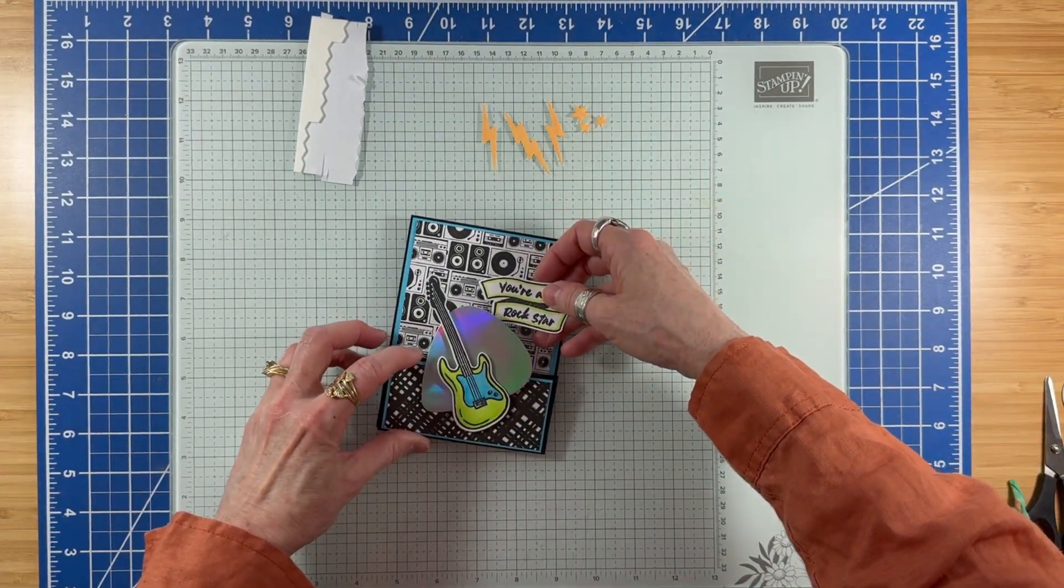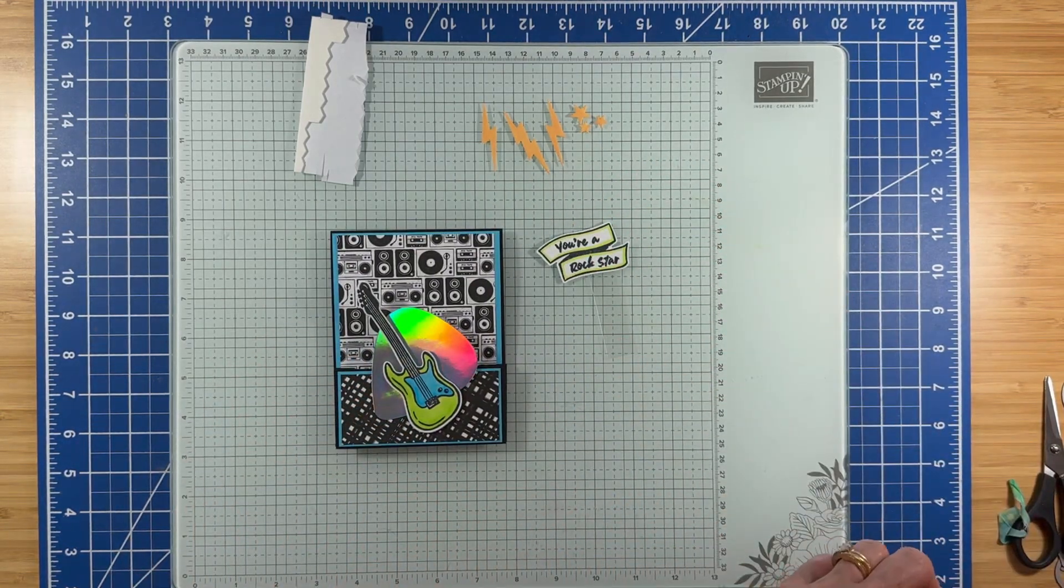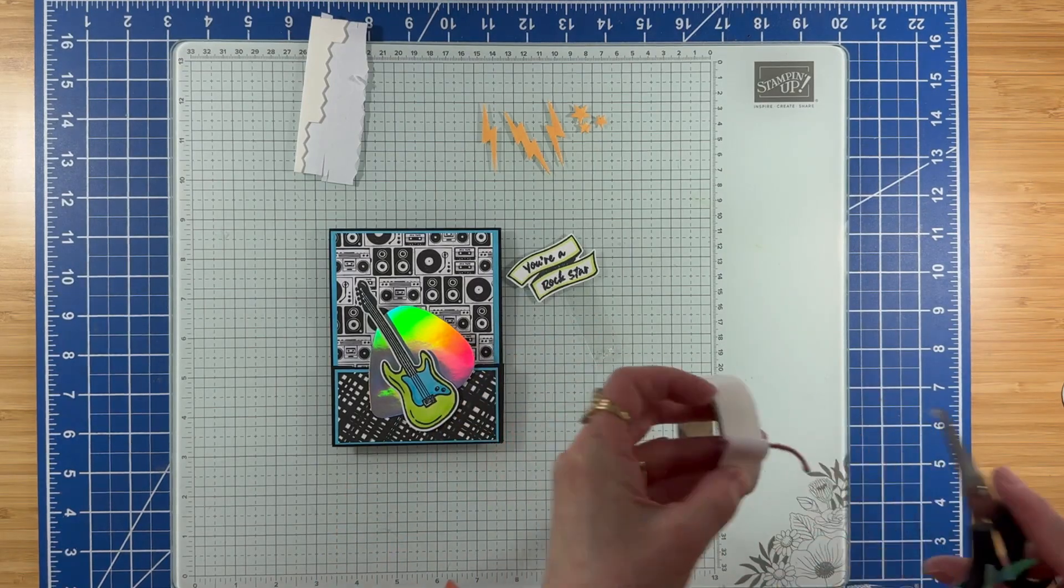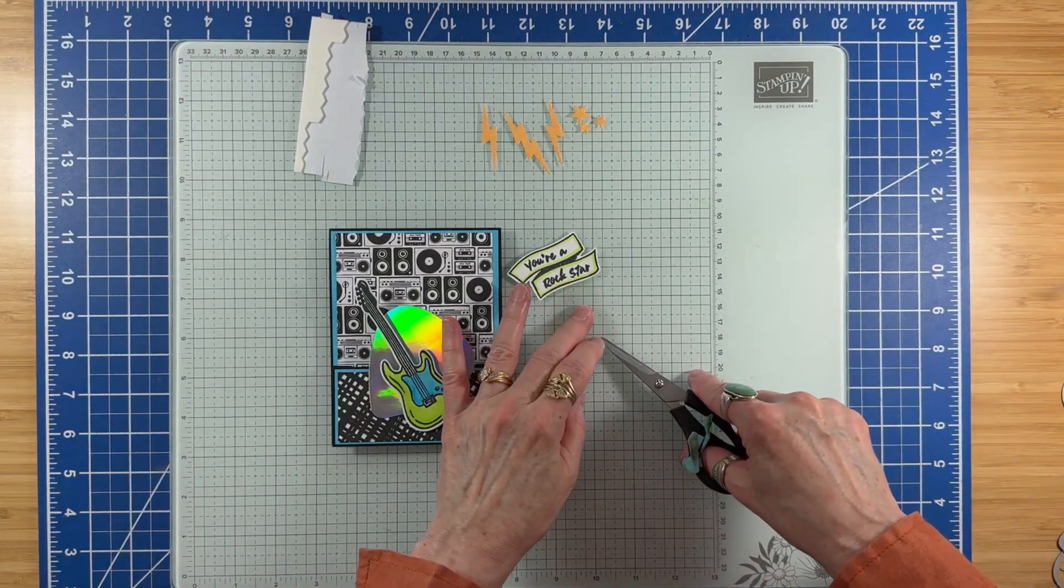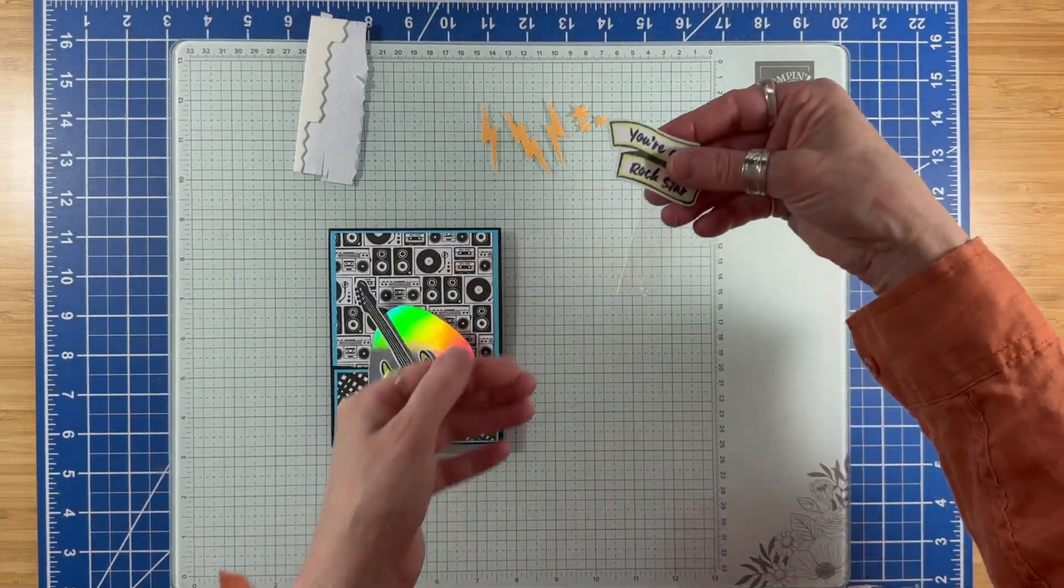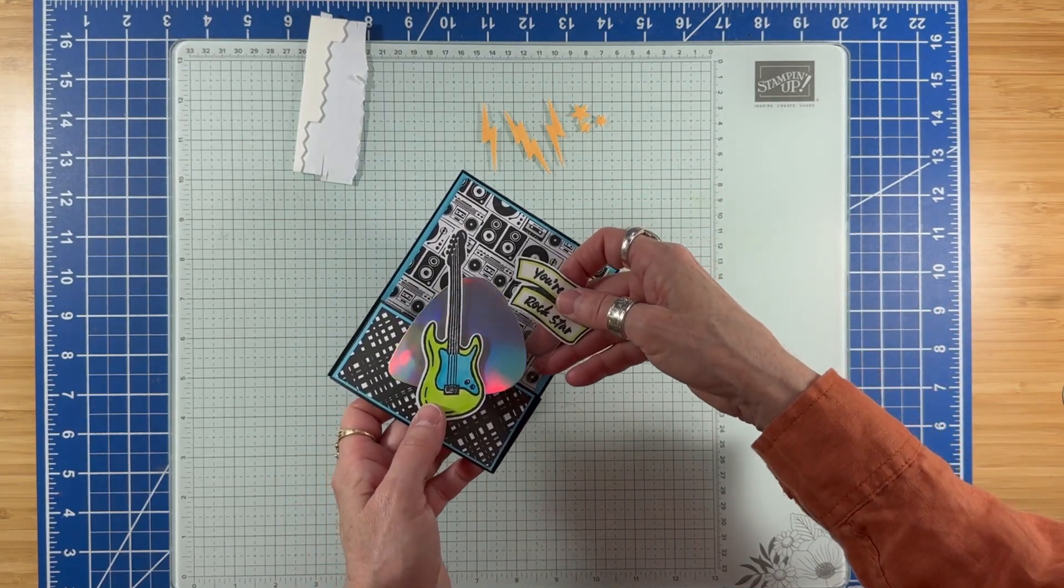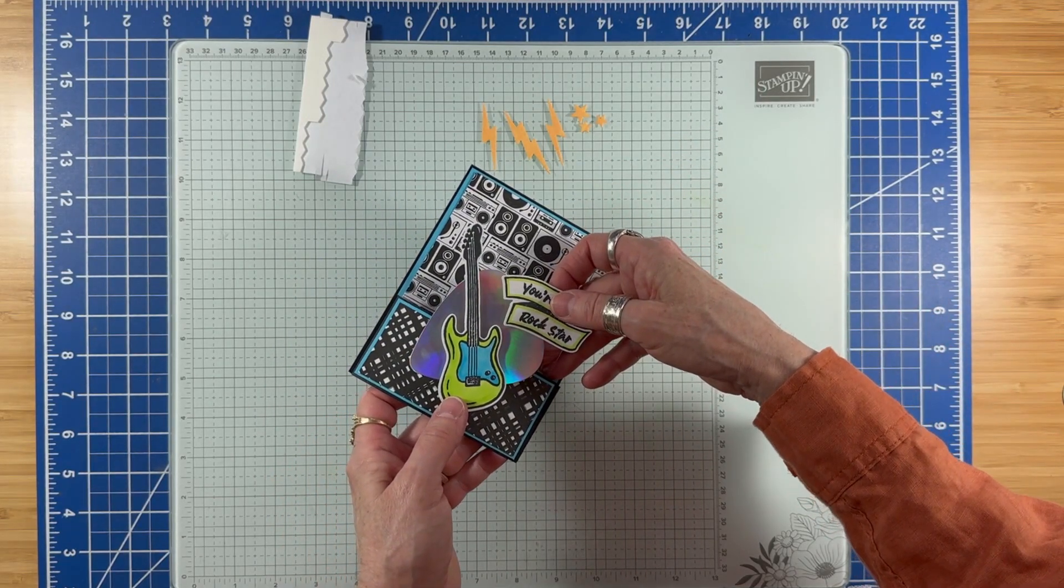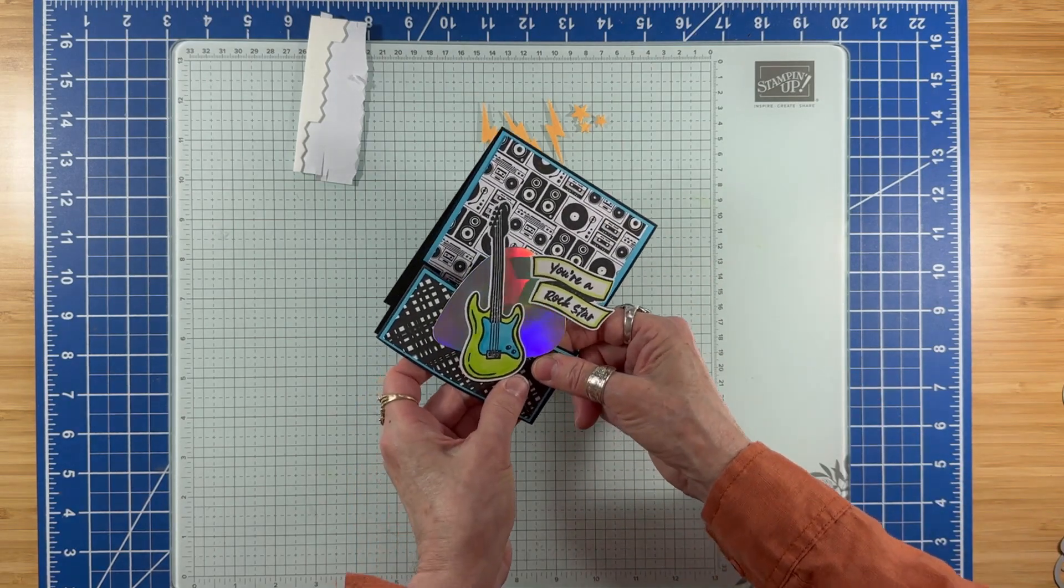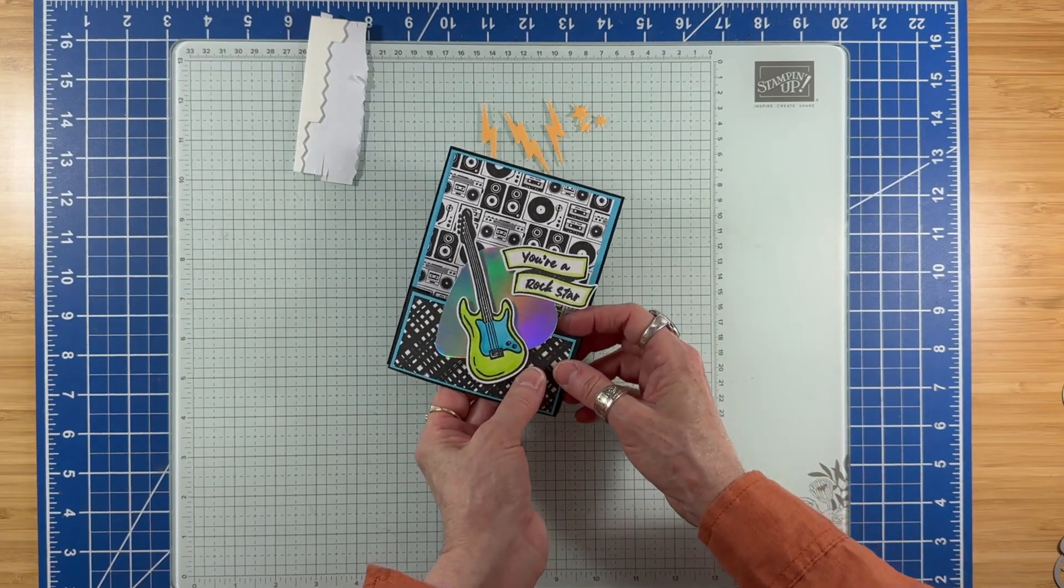I'm going to insert it in here. I need to put glue dots on here on top of the window sheet, and I'm being generous because I don't want it to move. So I have my glue dots on the window sheet. I'm going to slide this under here until the You're a Rockstar overlaps my guitar pick, and I'm pressing the bottom of it inside under on the underside of the bridge.